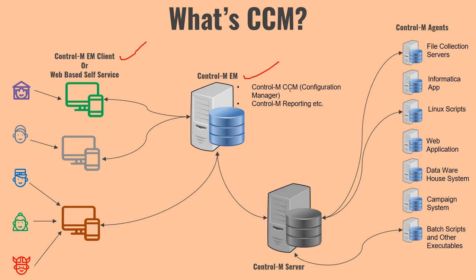Other than CCM, there is another component called Control M Reporting. This also gets installed whenever you install Control M EM. Using Control M Reporting you can see a history of job execution — for example, the start and end time for each job and how many milliseconds each job took to complete.